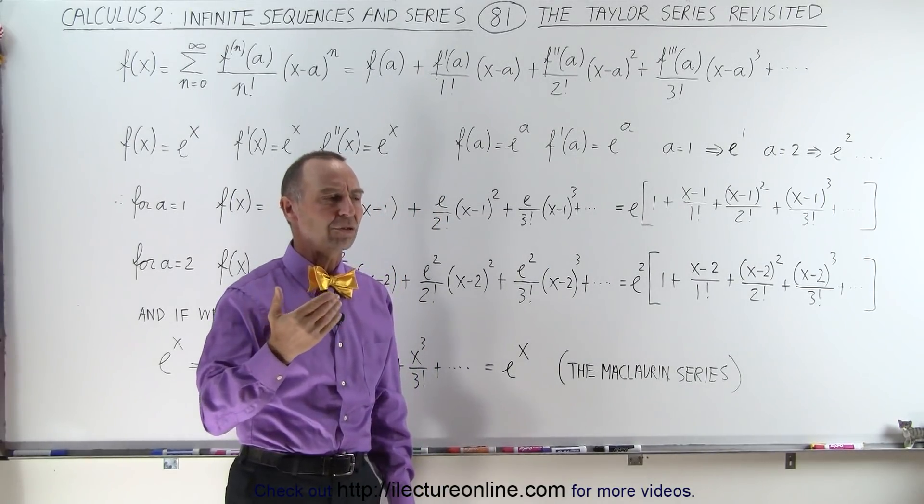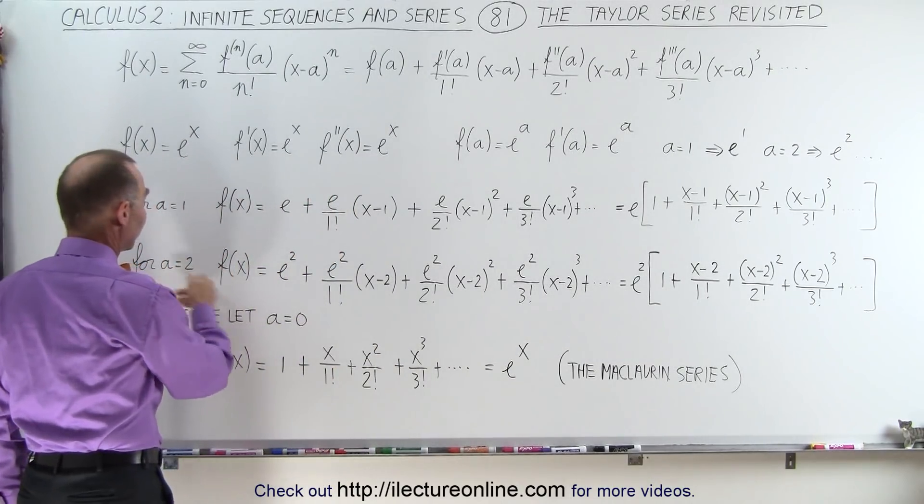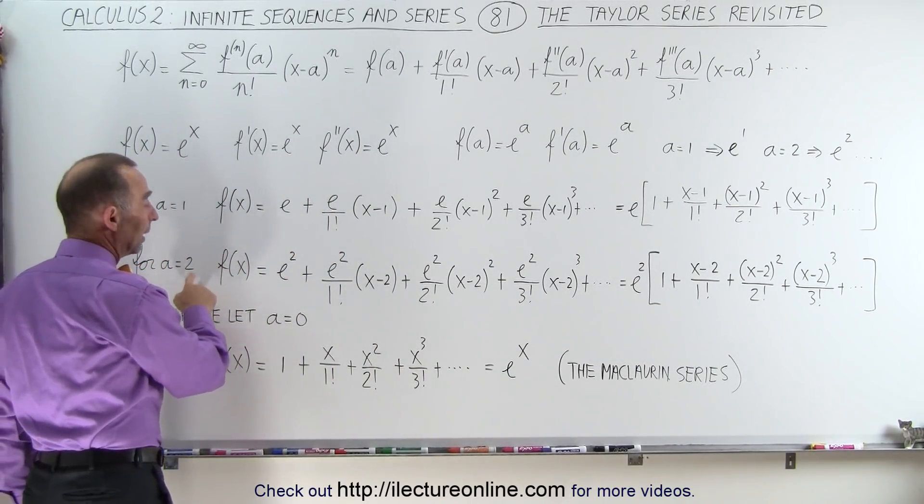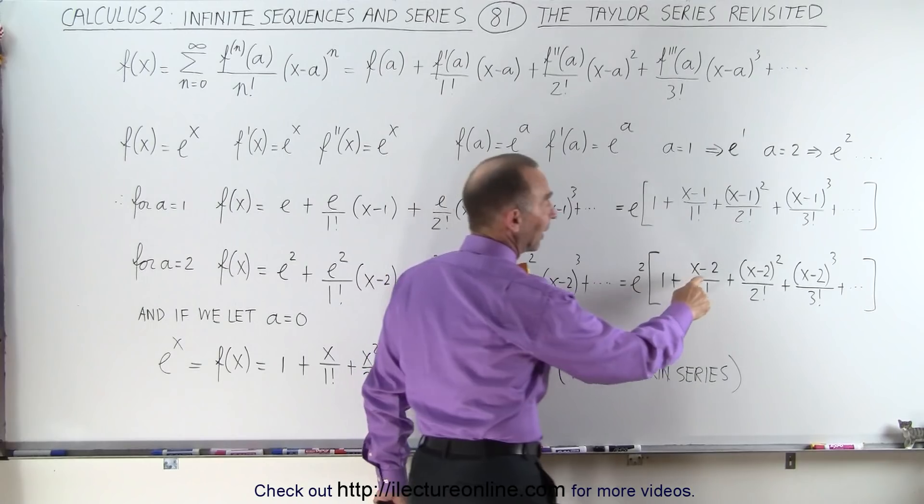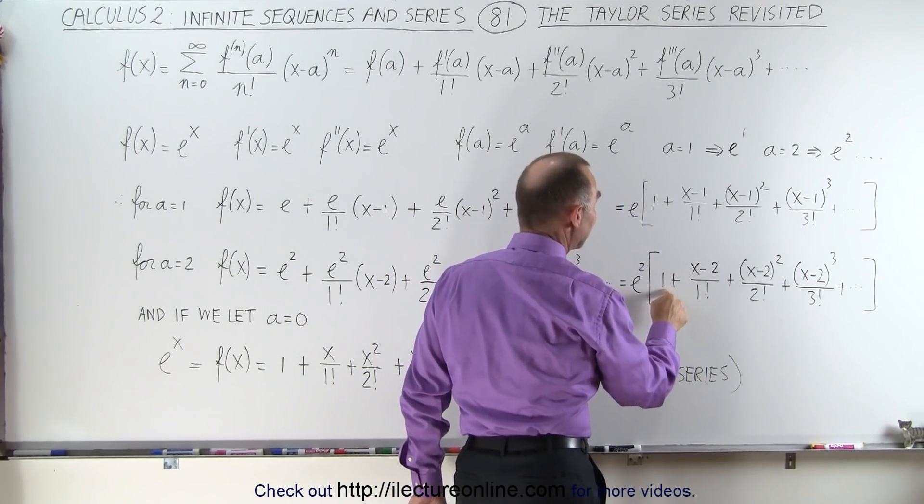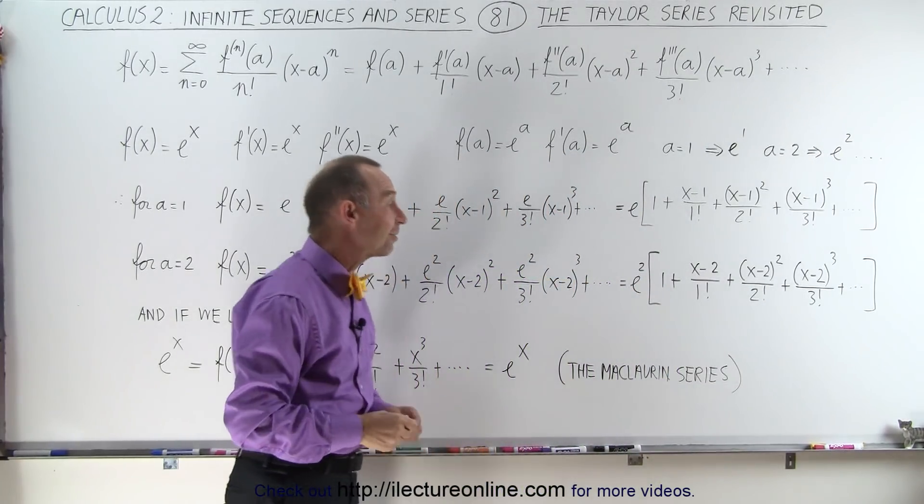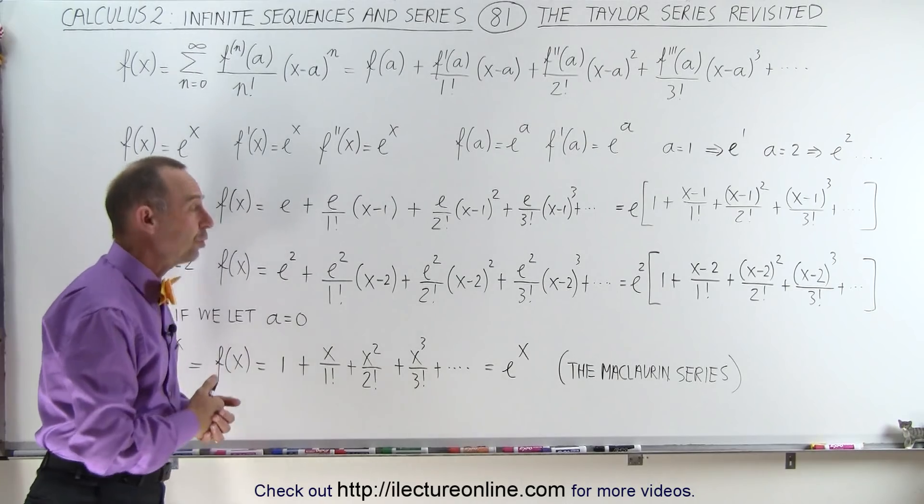Let's say we want to evaluate the function for x = 2. Then we write the Taylor series like this with a = 2, and then you can see that when we plug in the value of x = 2, all these terms go to 0, and we get 1 times e to the second power, which is the exact value for the function e^x for x = 2.